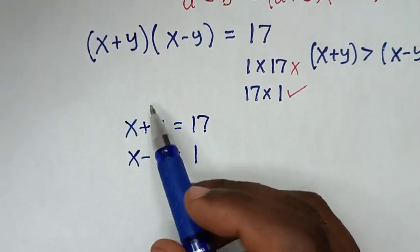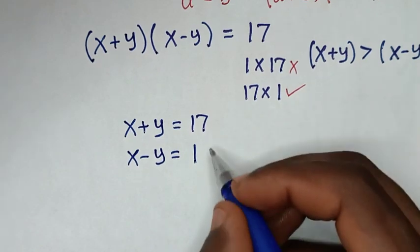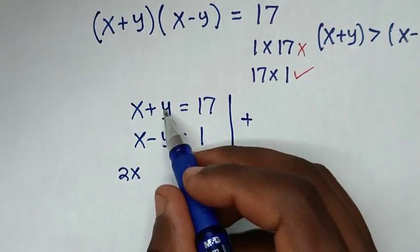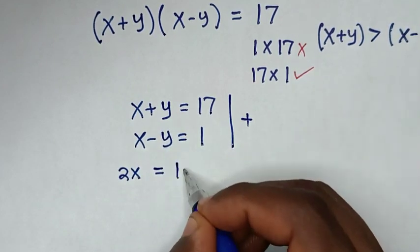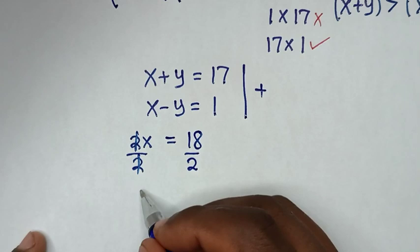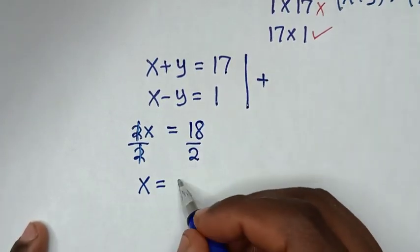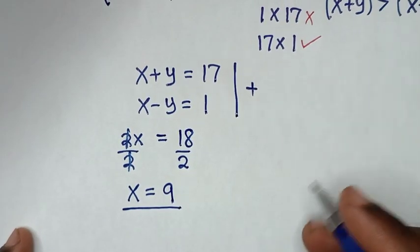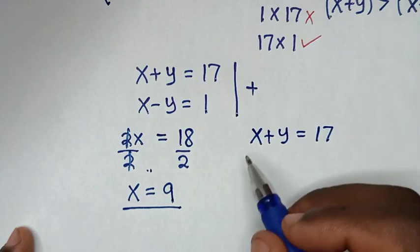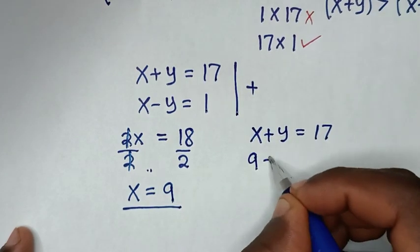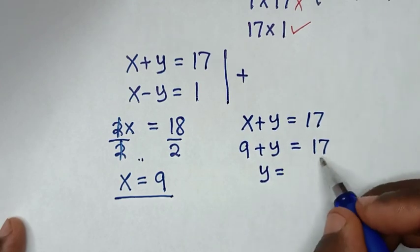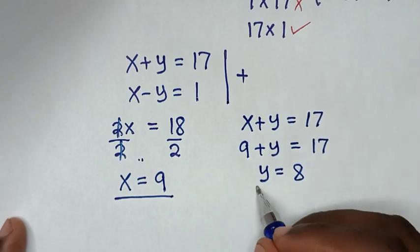We solve the system x plus y equals 17 and x minus y equals 1 using the elimination method. Adding the two equations: 2x equals 18, so x equals 9. To find y, we substitute x equals 9 into the first equation: 9 plus y equals 17, so y equals 17 minus 9, which is 8.